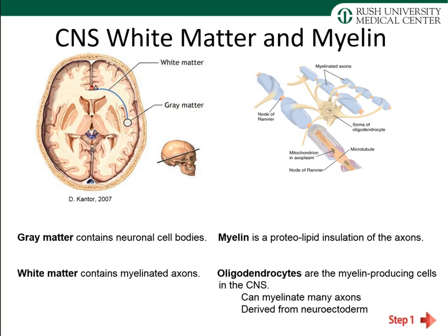I want to repeat this slide from the multiple sclerosis talk regarding myelin within the central nervous system. Gray matter contains neuronal cell bodies, and white matter contains myelinated axons. Myelin is the proteolipid insulation of the axons, produced by the oligodendrocyte within the CNS. An oligodendrocyte can myelinate many axons — different from Schwann cells — and is derived from the neuroectoderm.